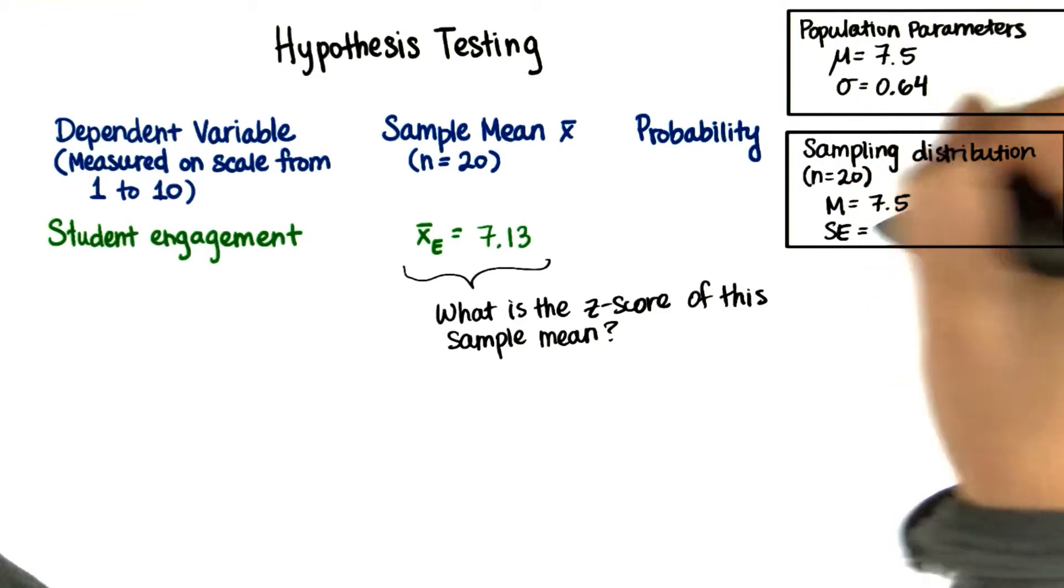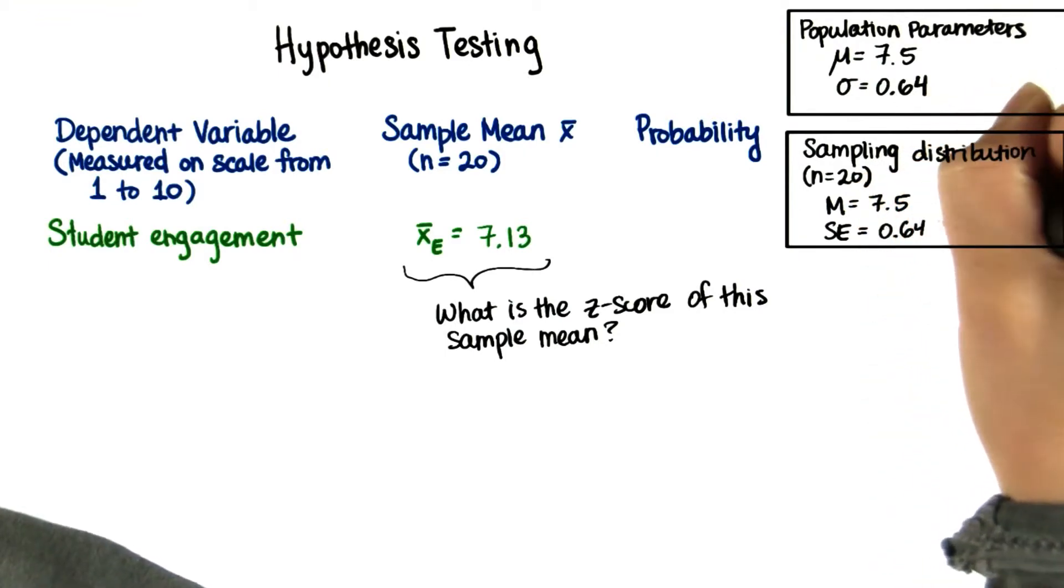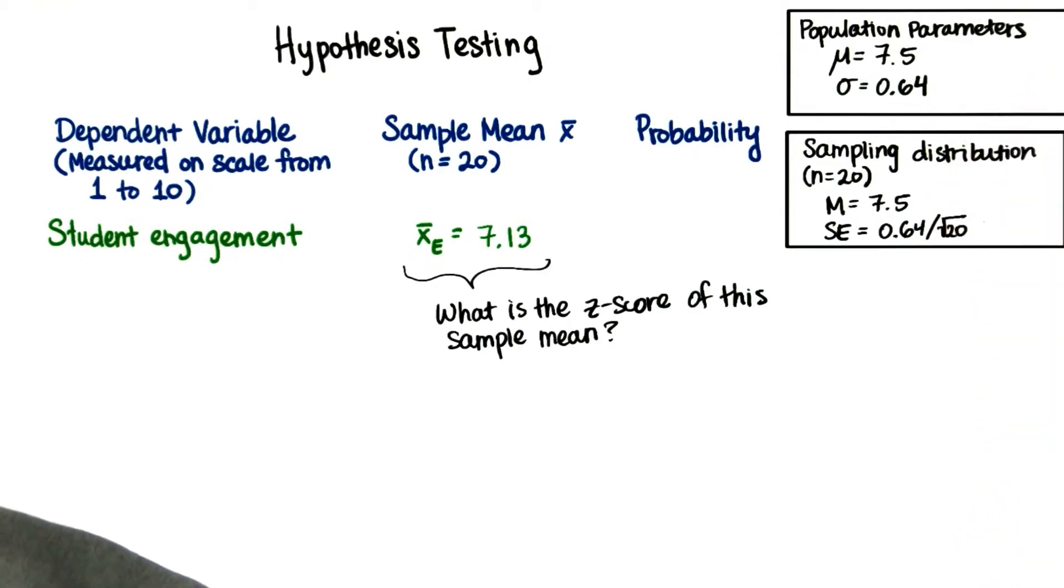And the standard error, which is the standard deviation of the sampling distribution, is the population standard deviation divided by the square root of the sample size. So this is about 0.14.